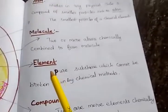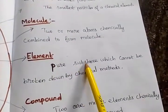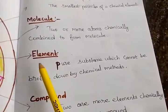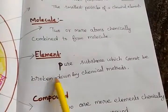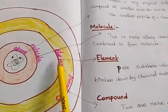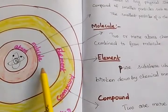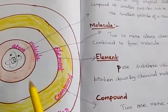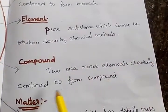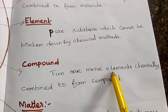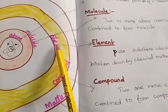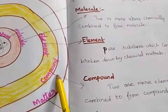Next, we see elements and compounds. An element is a pure substance which cannot be broken down by chemical methods. Two or more elements chemically combine to form a compound.